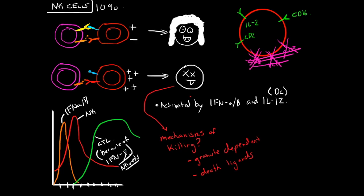How do natural killer cells mediate innate immunity to viral infections? Interferon alpha and beta can activate natural killer cells to increase their lytic activity against virally infected cells. To discriminate between normal cells and infected or cancer cells, they use a dual receptor mechanism. On one side, a ligand binds class I MHC — this is the inhibitory receptor. When it is bound to class I MHC, nothing is wrong with the cell, and the inhibitory signal is triggered.